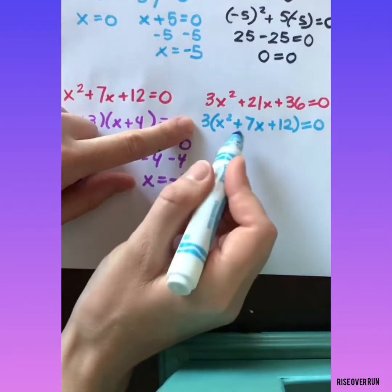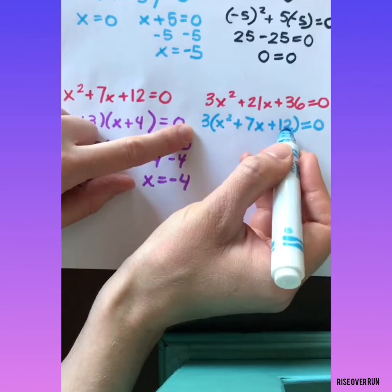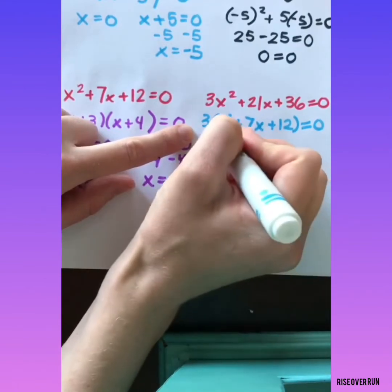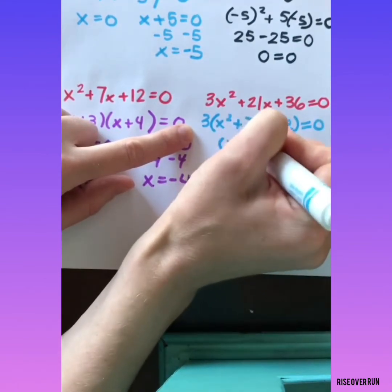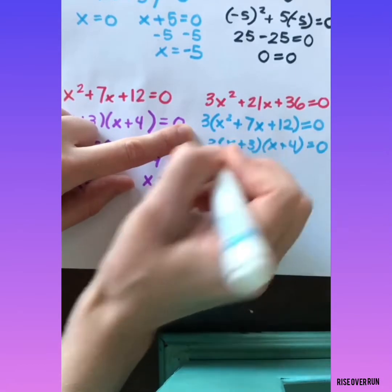Now that we have 3 outside the parentheses, we can factor what's inside here. Two numbers that multiply to get 12 and add to get 7 are 3 and 4. And we still have our 3.